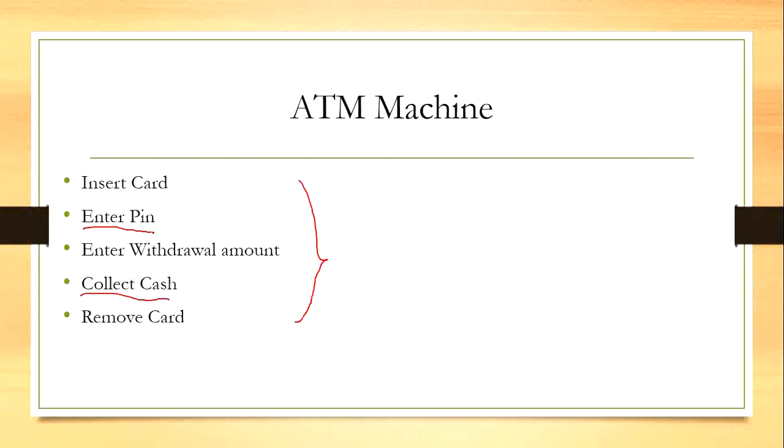That is, we cannot enter PIN after collecting cash. These are all ordered sequences with respect to time. First this happens, then only this happens. If we represent all these events in a sequence, it looks like this.